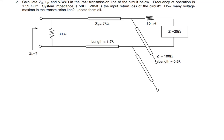Hello and welcome to another EE140 video. Today's example is question number two on our homework on RF circuits. We're tasked to find Z_in, Gamma_in, and VSWR in the 75 ohm transmission line. The operating frequency is 1.59 GHz and the system impedance is 50 ohms. We also need to find the input return loss and the maxima along the transmission line.